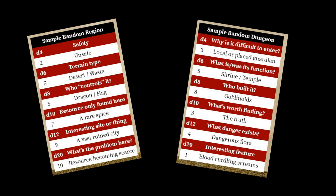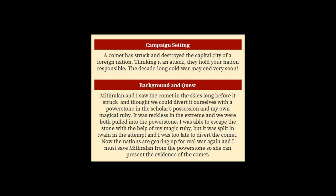My character — who is yet unnamed, we'll find that out at the end — needs to repair that magical ruby so it can be used to save Mithralen from the power stone. Then together they will go to the powers that be, maybe both rulers, and lay out the evidence that this wasn't an attack — this was a comet from outer space. So let's roll up a region and a dungeon and tie that into our setting and background.